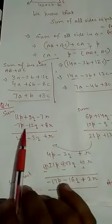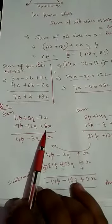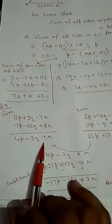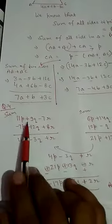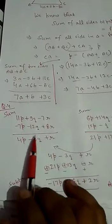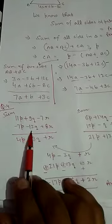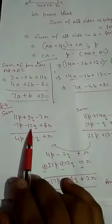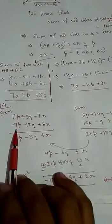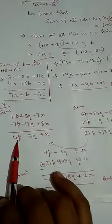For question number 4, we first sum 11p + 9q - 7r and -7p - 12q + 8r. Arranging like terms: 11p and -7p give 4p. 9q is positive, 12q is negative, so the negative value is larger - we get -3q. For r: positive 8r minus 7r gives +r, so 4p - 3q + r is the first sum.